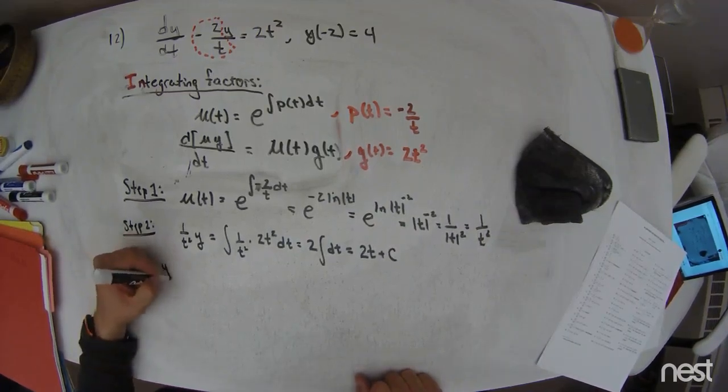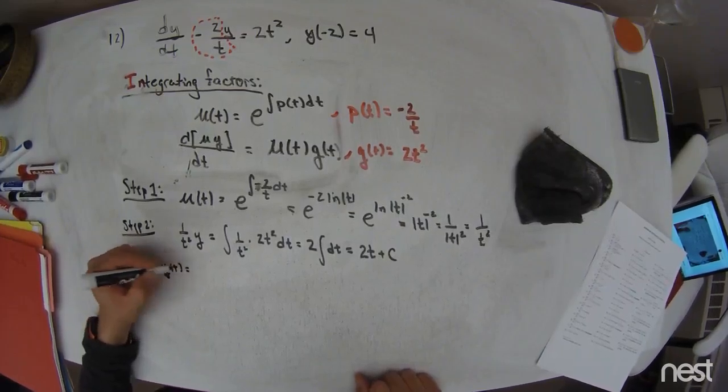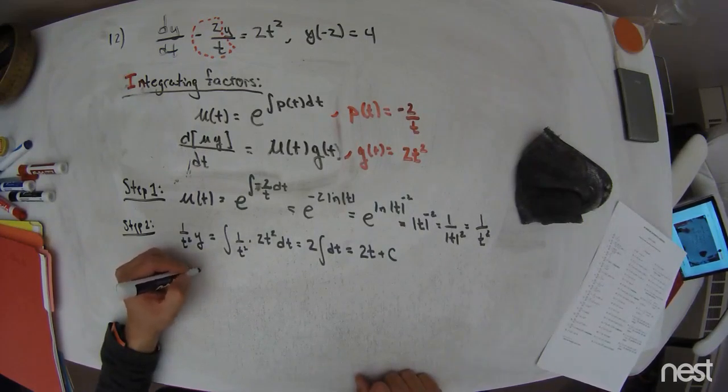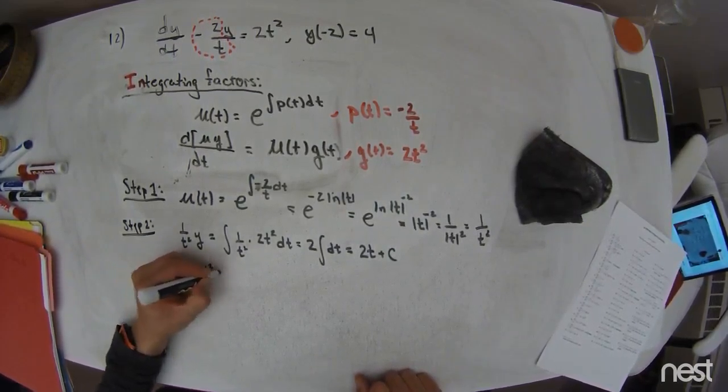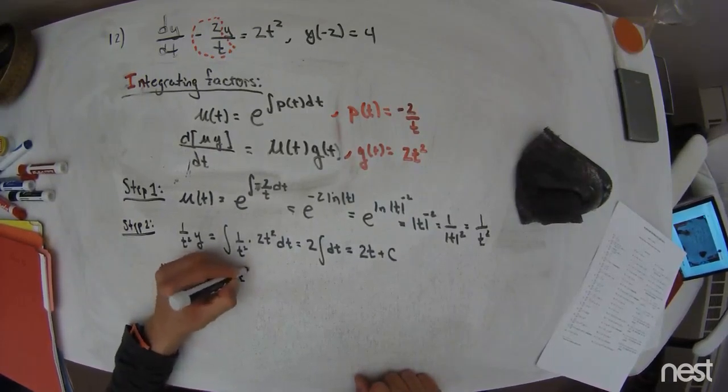Okay, so that means that y of t is equal to 2t cubed plus ct squared.